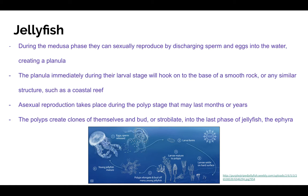In a fully grown adult, more commonly known as the medusa phase of a jellyfish, they can sexually reproduce by discharging sperm and eggs into the water, creating a planula. A planula is the free-swimming larva with a flattened oval and solid body. The planula, immediately during their larval stage, will hook on to the base of a smooth rock or any similar structure, such as a coastal reef. They then develop into the next stage of a jellyfish's life: the polyp.